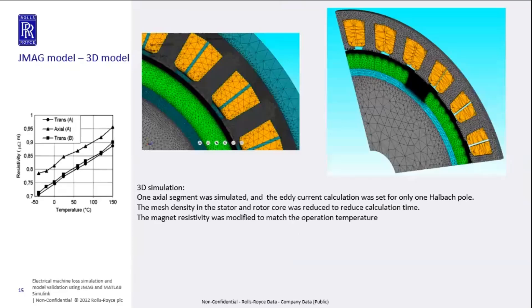For the magnet simulation, you have to switch to 3D. To keep model simplicity, I only simulated one segment, since the magnets are segmented on the rotor to reduce eddy current losses. I simulated just one pole, increased the mesh density in that pole, and modified the conductivity of the magnet to match the lower operating temperature.